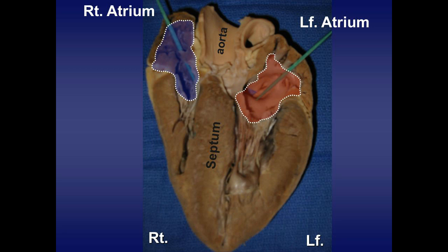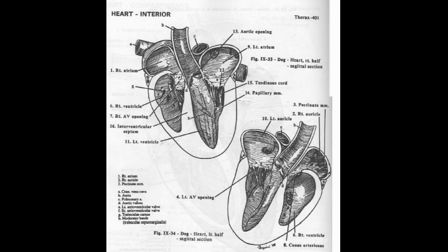The right atrium receives blood from the whole body through cranial and caudal vena cava, which collect blood from the legs, abdomen, thorax, head, and neck. The right ventricle pumps deoxygenated blood via the pulmonary trunk to the lungs in order to oxygenate it.